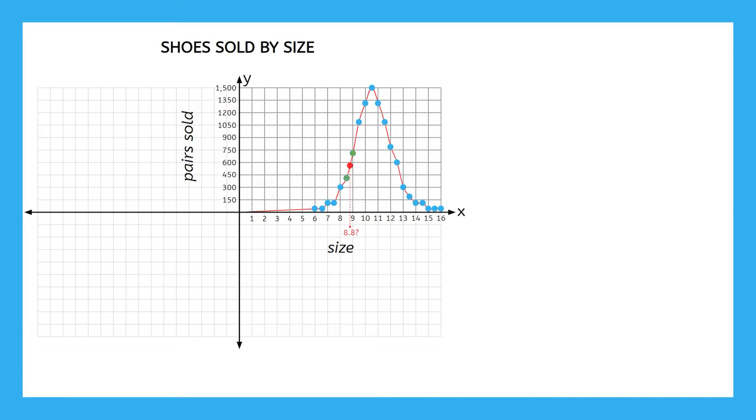Functions made of individual points like this are called discrete functions. Their graphs, like we see in this example, will consist of unconnected individual points.